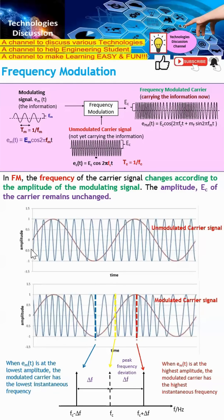The modulating signal has a lower frequency, while the carrier has a higher frequency. What we see here is the frequency modulated signal that results from combining them.